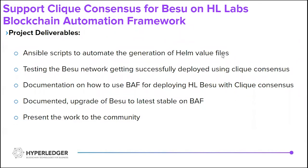The project deliverables are: Ansible scripts to automate the generation of Helm value files, testing the Besu network so that it gets successfully deployed using QBFT consensus, documenting how to deploy Hyperledger Besu with QBFT, upgrading the existing documentation with the latest details and QBFT consensus support, and presenting the work to the Hyperledger Besu community.